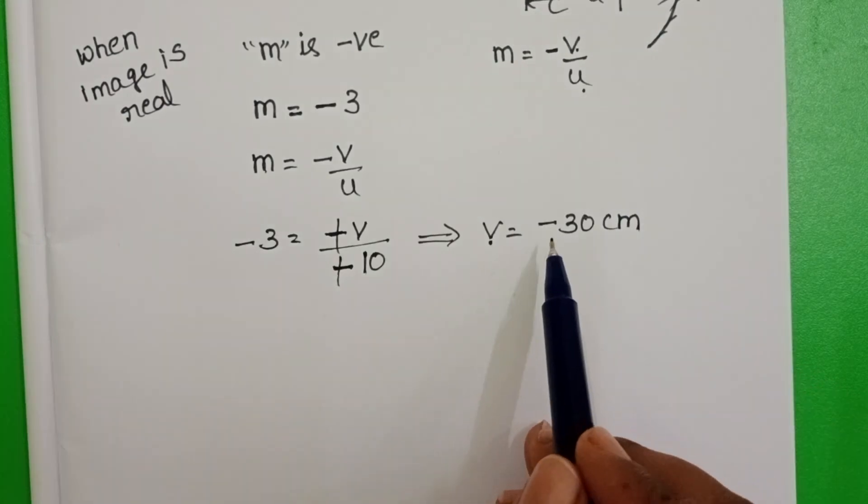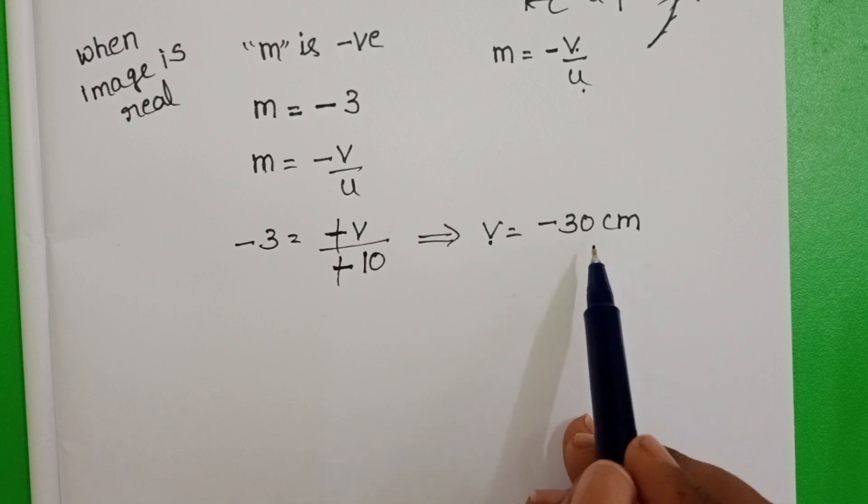Here, negative sign indicates the image is real image. So, image distance from the concave mirror is equals to 30 centimeters.